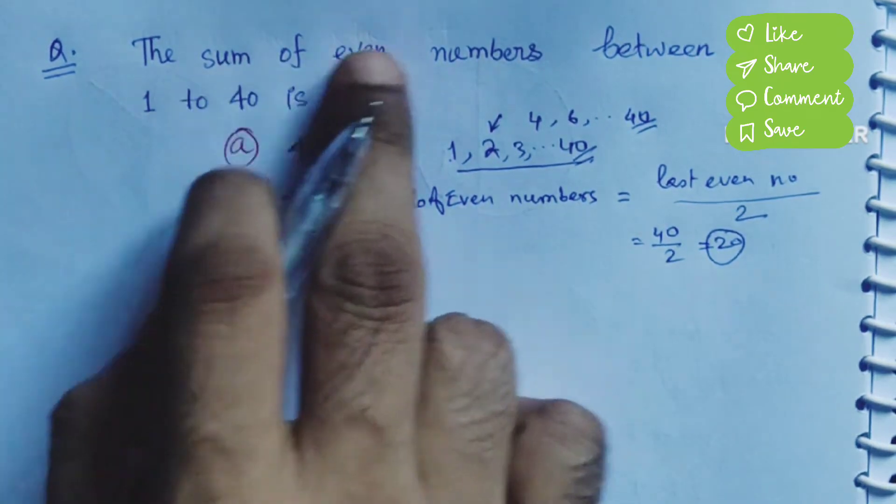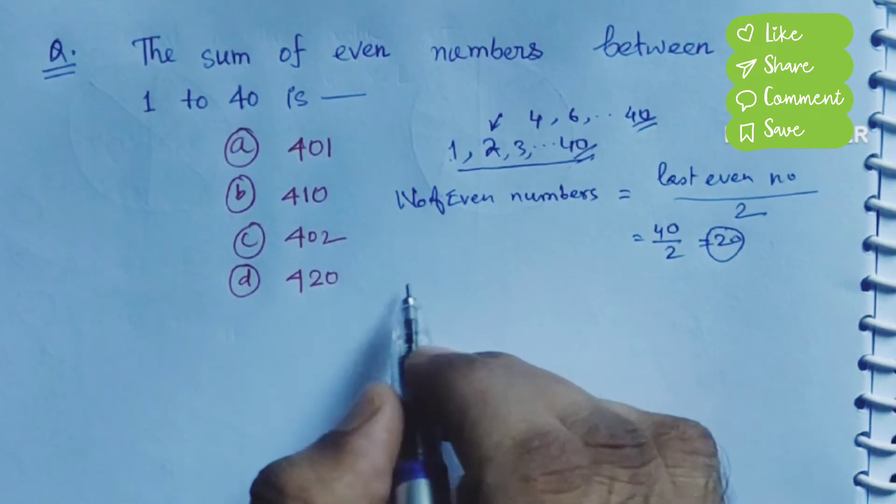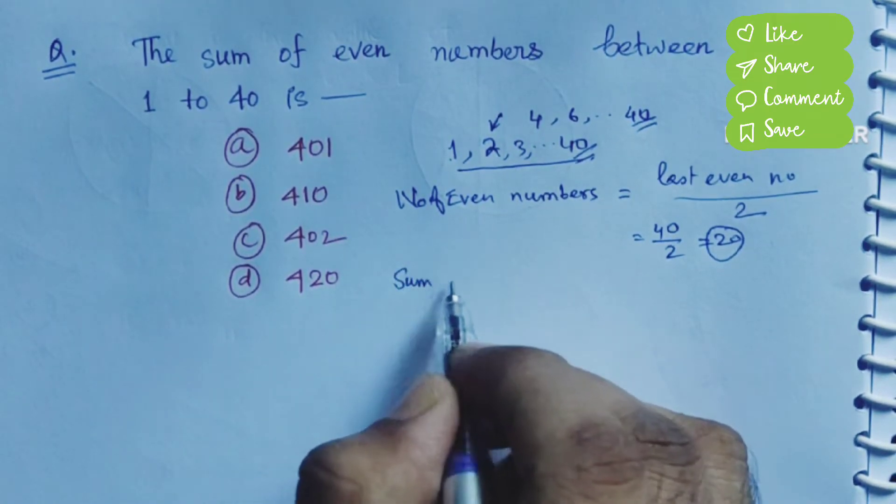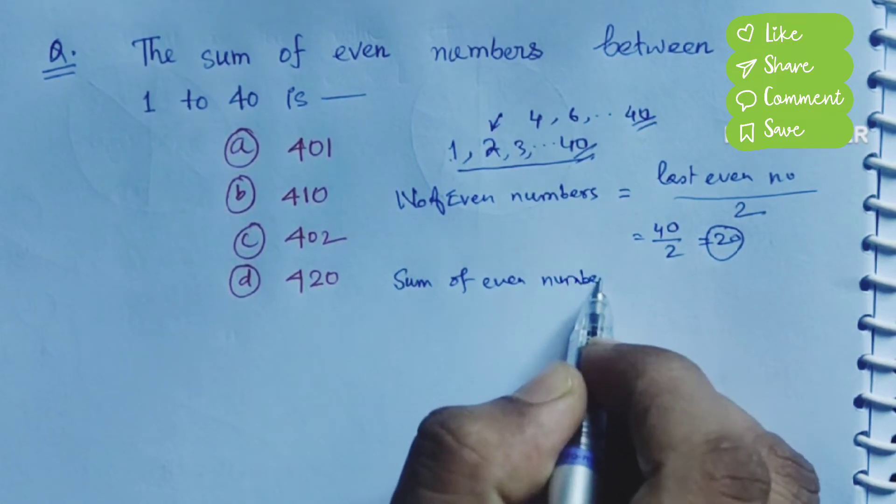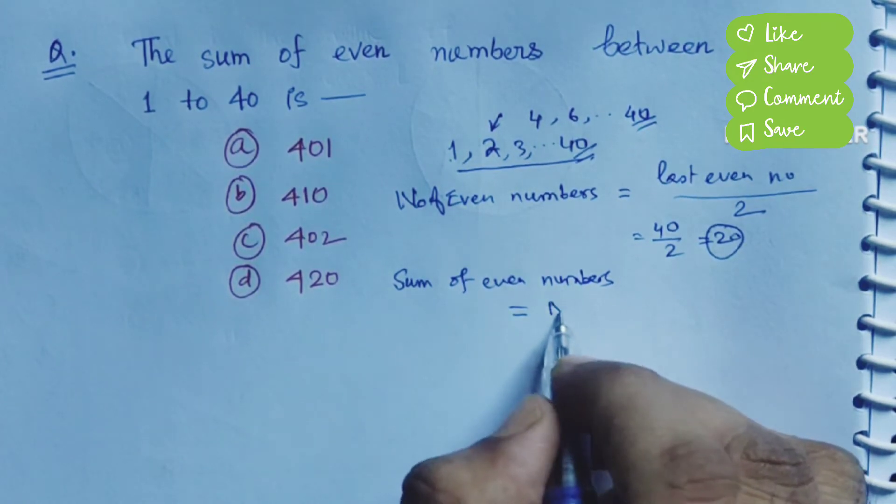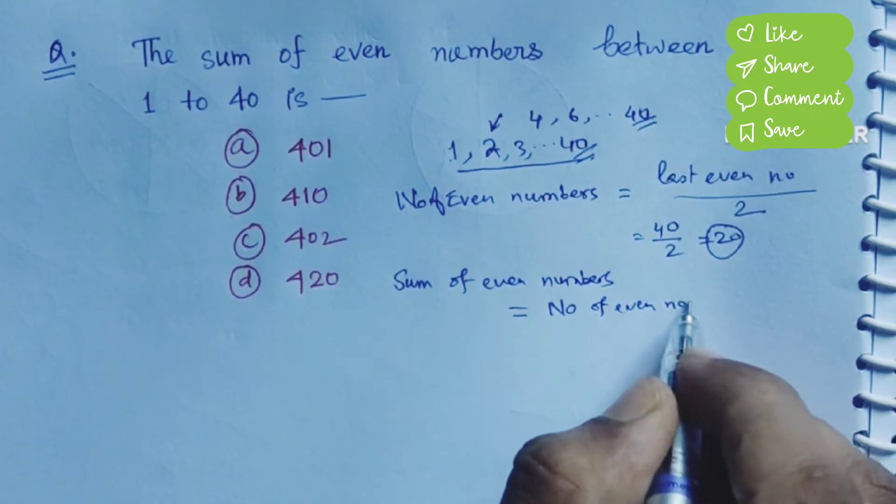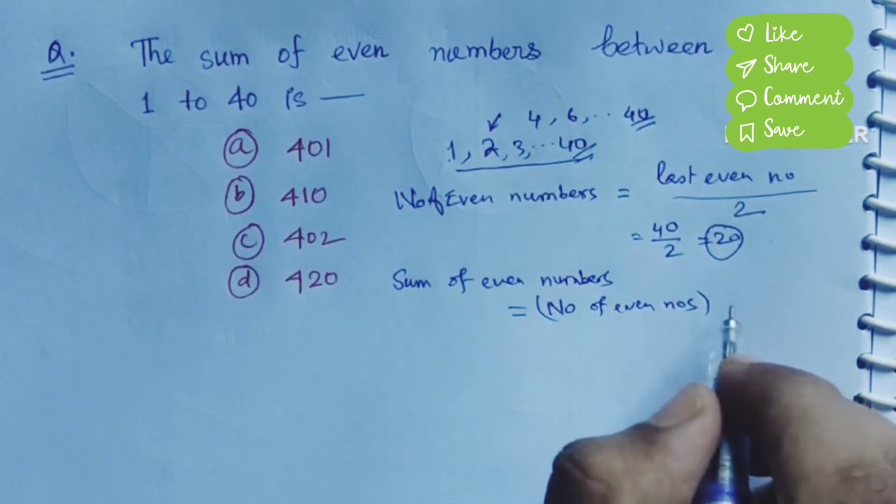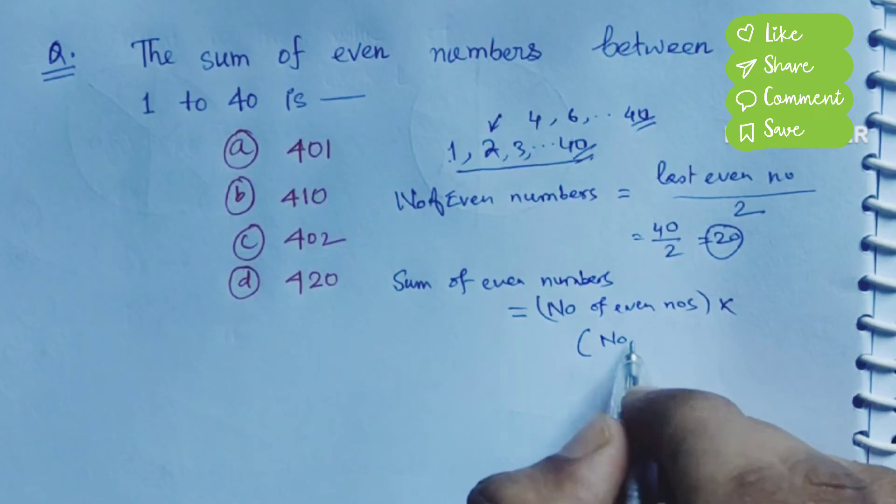Now this is sum of even numbers between 1 to 40. So sum of even numbers formula is: sum of even numbers is equal to the number of even numbers into that number of even numbers plus 1.